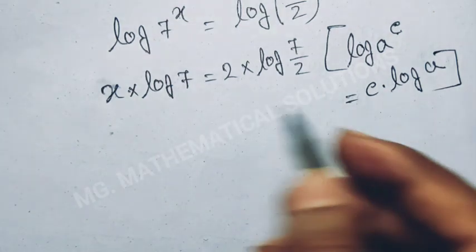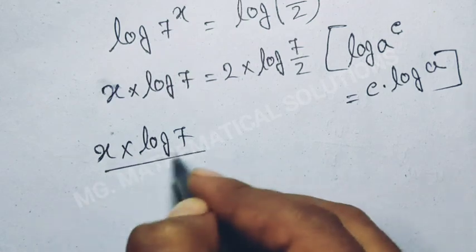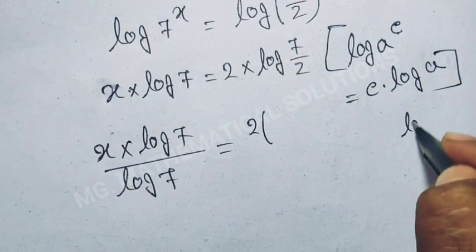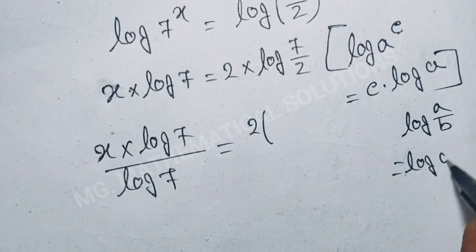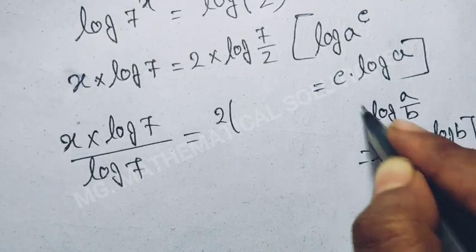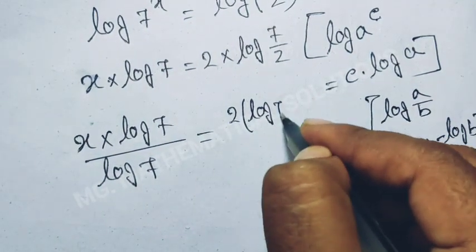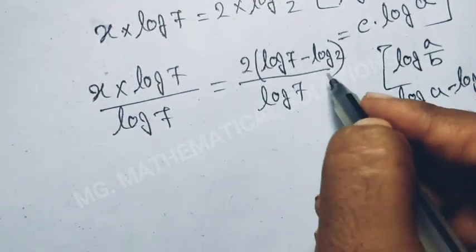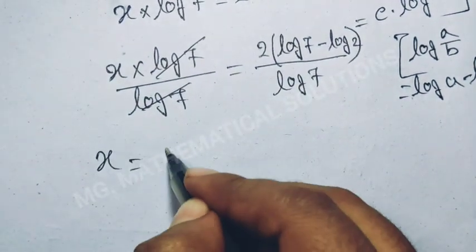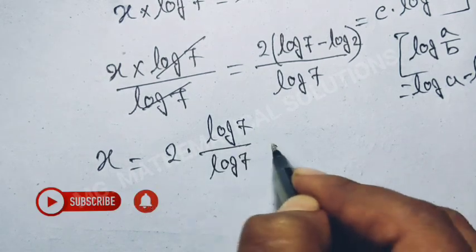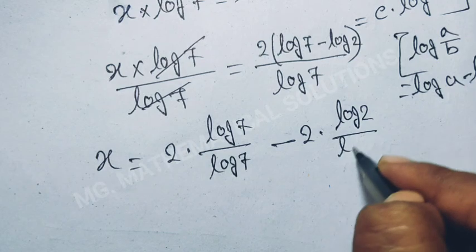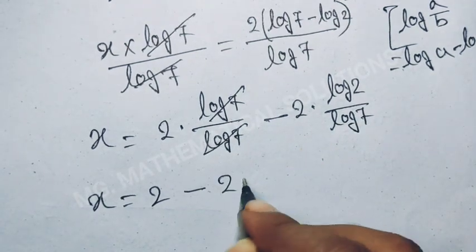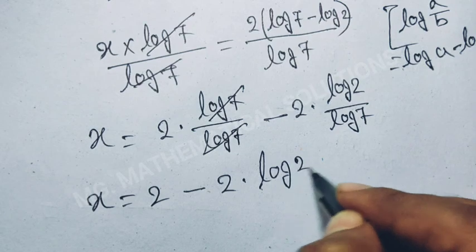Now, dividing both sides by log of 7: x equal to 2 times log of 7 over 2, divided by log of 7. We use the formula log of a over b means log of a minus log of b. So x equal to 2 times log of 7 minus log of 2, all divided by log of 7. Log of 7 cancels, giving x equal to 2 minus 2 times log of 2 over log of 7.